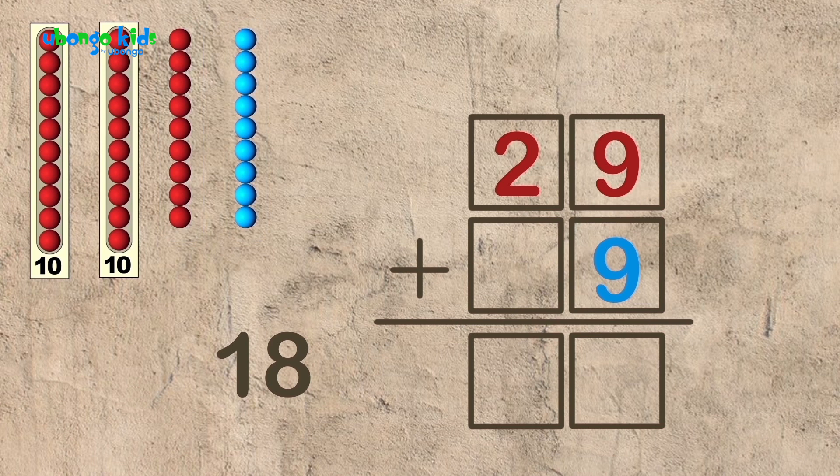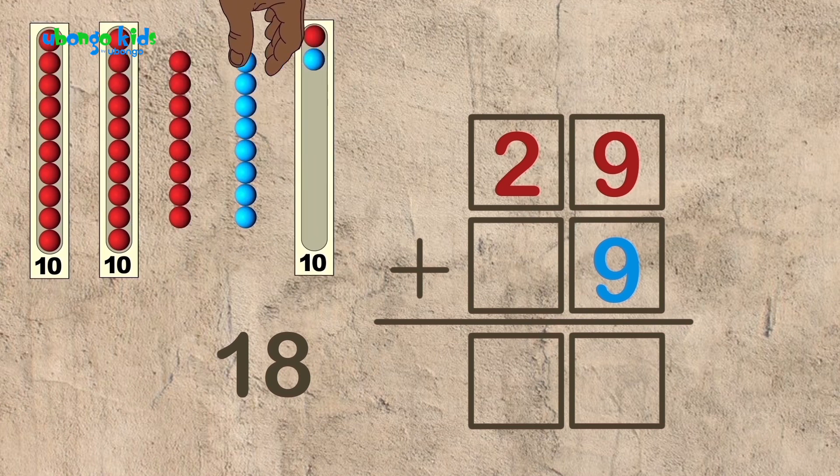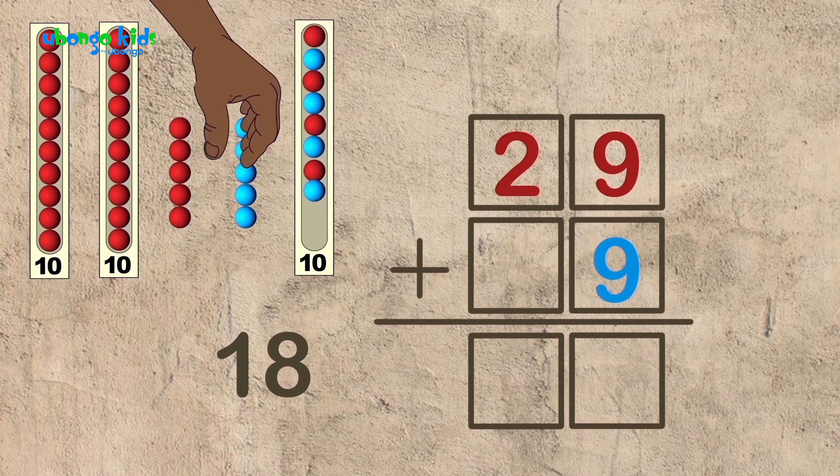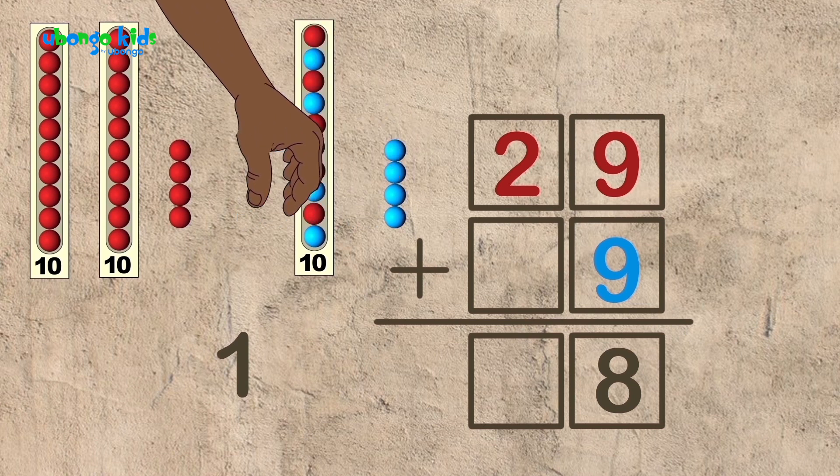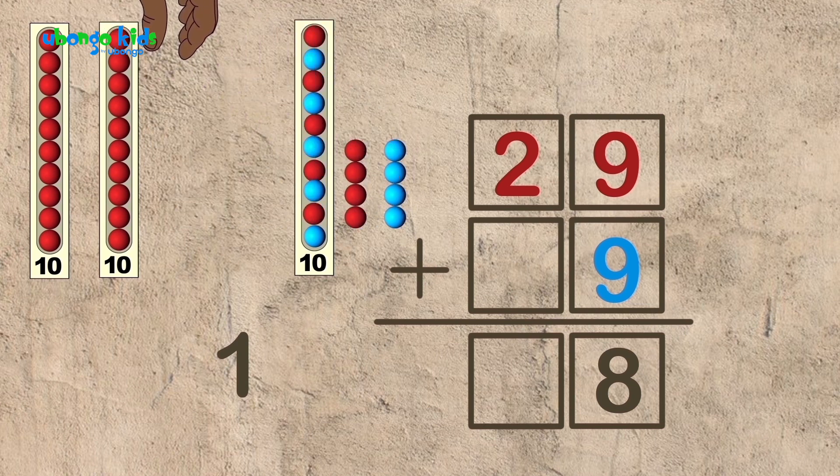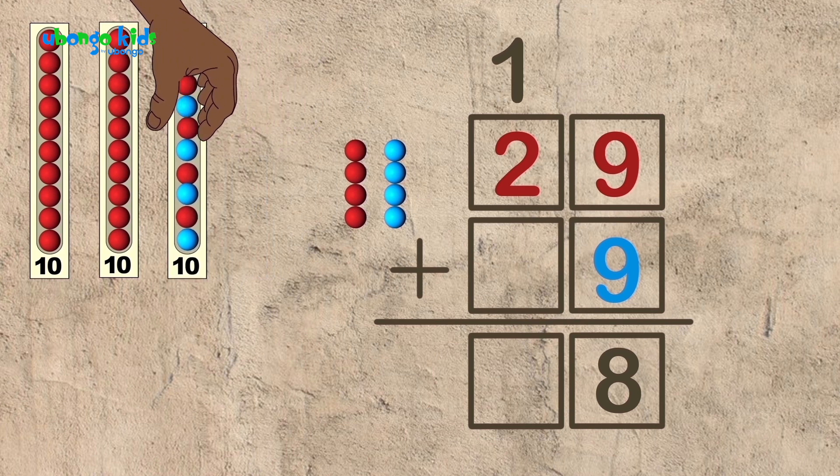So, that's eight ones and one ten. And now, we carry it over just like we did when we moved the beads. So, let's put the eight into the ones place. And now, we have one group of ten. So, we need to add that to the other tens. It carries over.